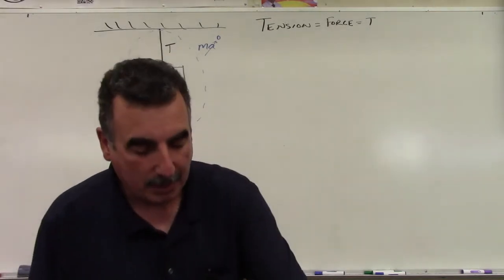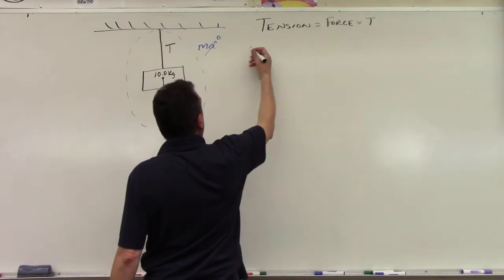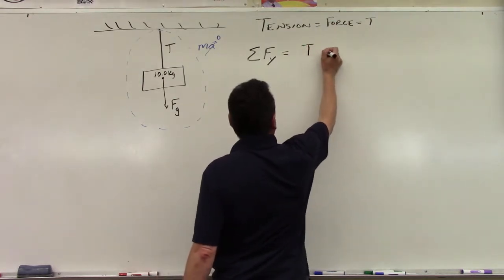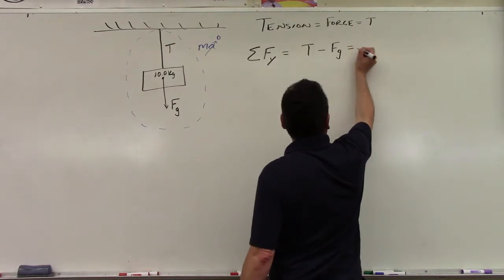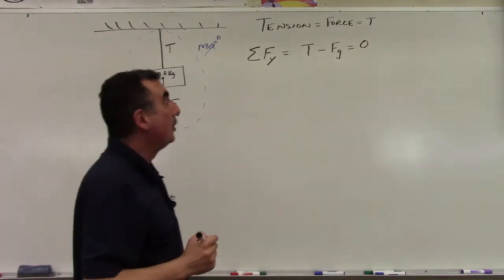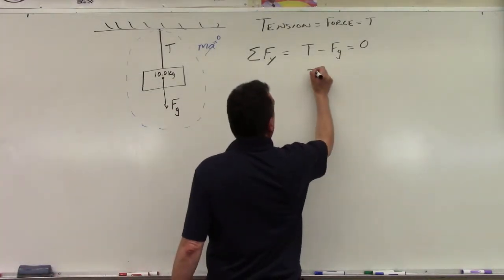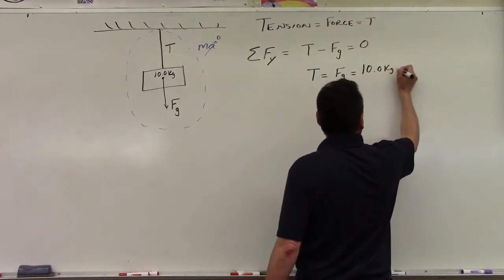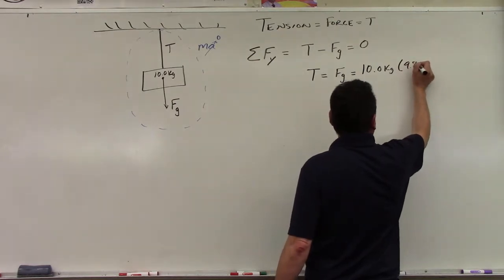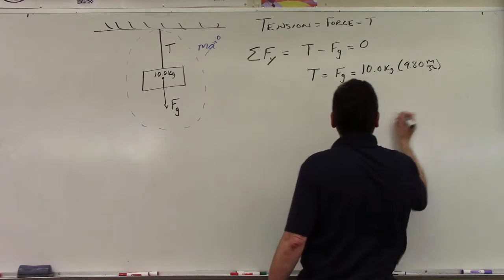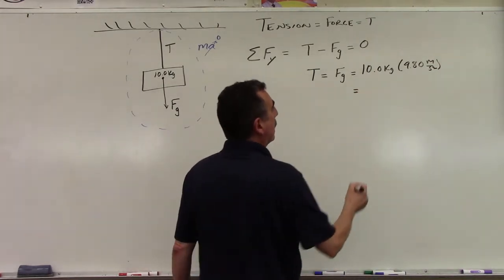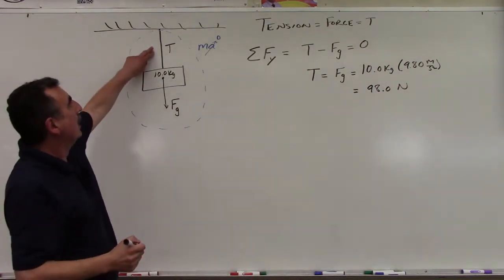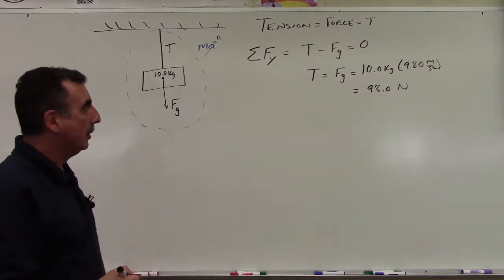Here's how we set this up. Since this is in the y-direction, the sum of forces — some teachers call it net force — is equal to the tension minus the force of gravity of the object, and in this case it's equal to zero since it's static. Therefore tension equals FG, which is 10.0 kilograms times 9.80 meters per second squared, giving us 98.0 newtons. So the tension in this cord for this setup is 98.0 newtons.